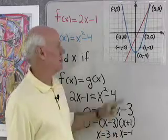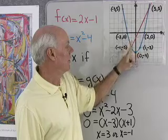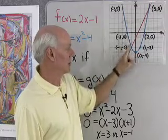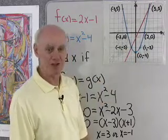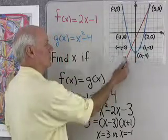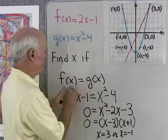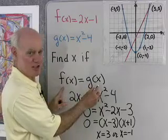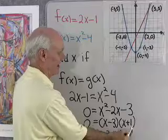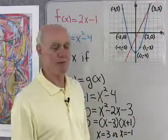How about x equal to negative 1? Well, when x is negative 1, y is equal to negative 3. And again, you can see the red graph and the blue graph cross each other right there, because that's a value of x for which they have the same value of y, meaning f of x is equal to g of x. So if I set those two things equal to each other and solve, I get x equal negative 1, and I can see it right there on the graph.